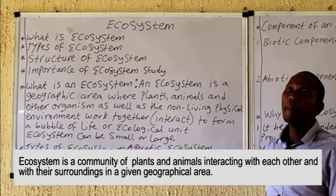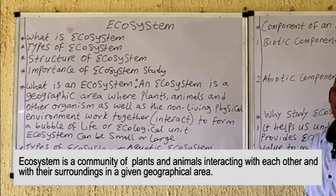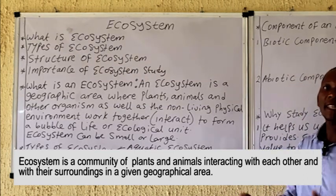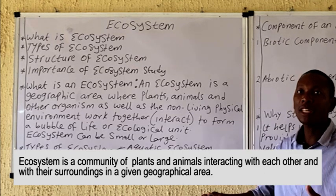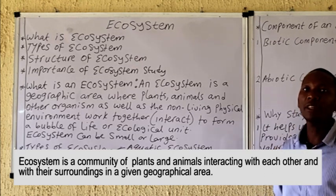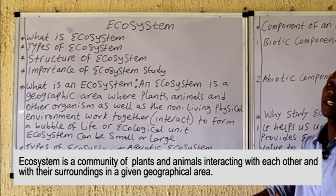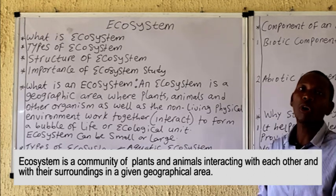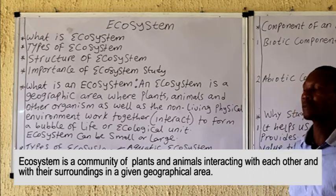It can also be described as a system where plants and animals interact among themselves as well as with their non-living environment to form a self-sustaining unit, or an ecological unit of life.